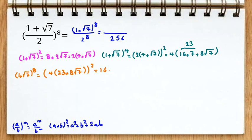4 squared is 16. 23 squared is 529. Plus 16 times 8 squared is 64 times 7. Plus 2 times 23, 46, times 8 root 7.